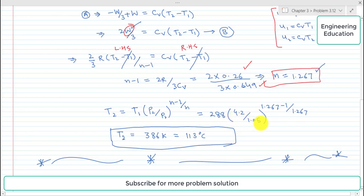We get the final temperature after reversible polytropic compression and it comes out 386 Kelvin, which is equivalent to 113 degrees centigrade.